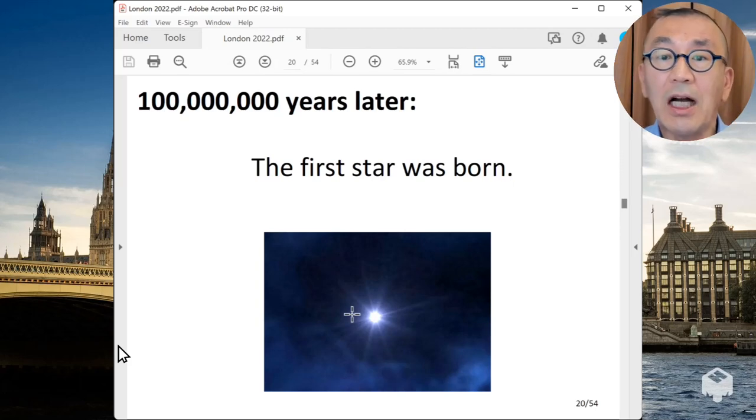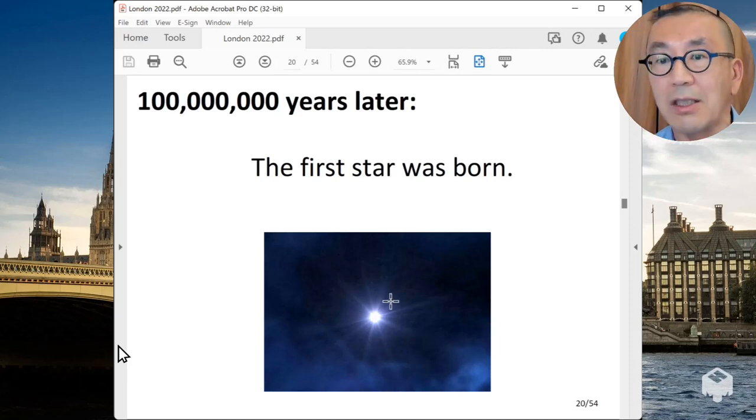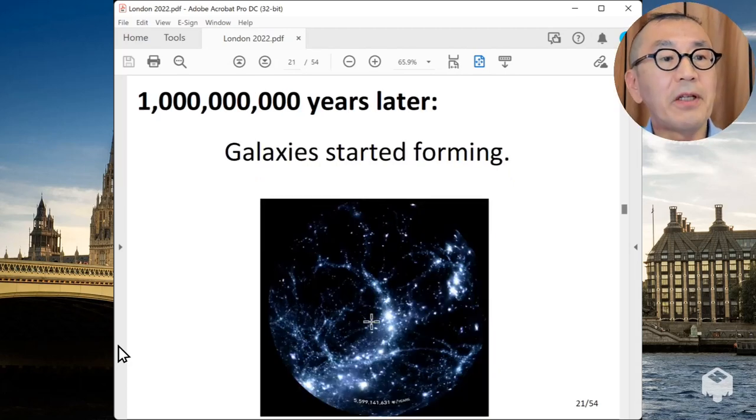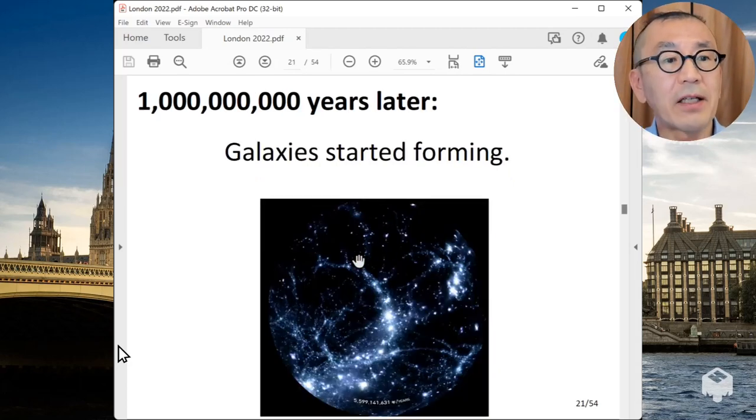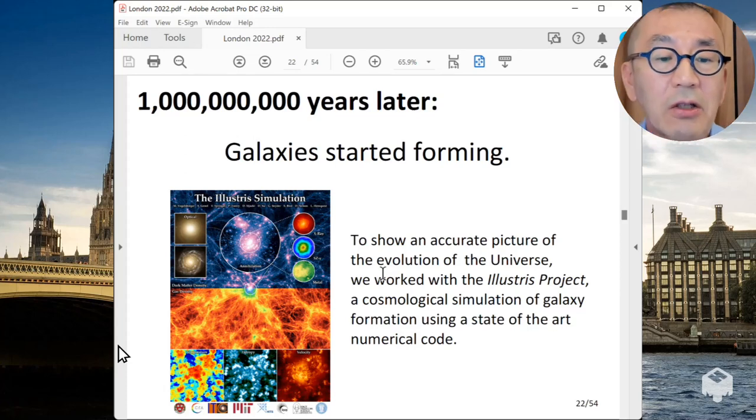And then eventually they became stars and galaxies. And the first star was born about 100 million years after the birth of the universe. And in fact, the James Webb Space Telescope that I showed you some of the first images earlier, is supposed to observe and study some of those first stars and galaxies. That's one of the things that these space telescopes are supposed to do. And a billion years after the Big Bang, the galaxies start forming. By the way, these images are not just made up. They are based on the accurate scientific theory.